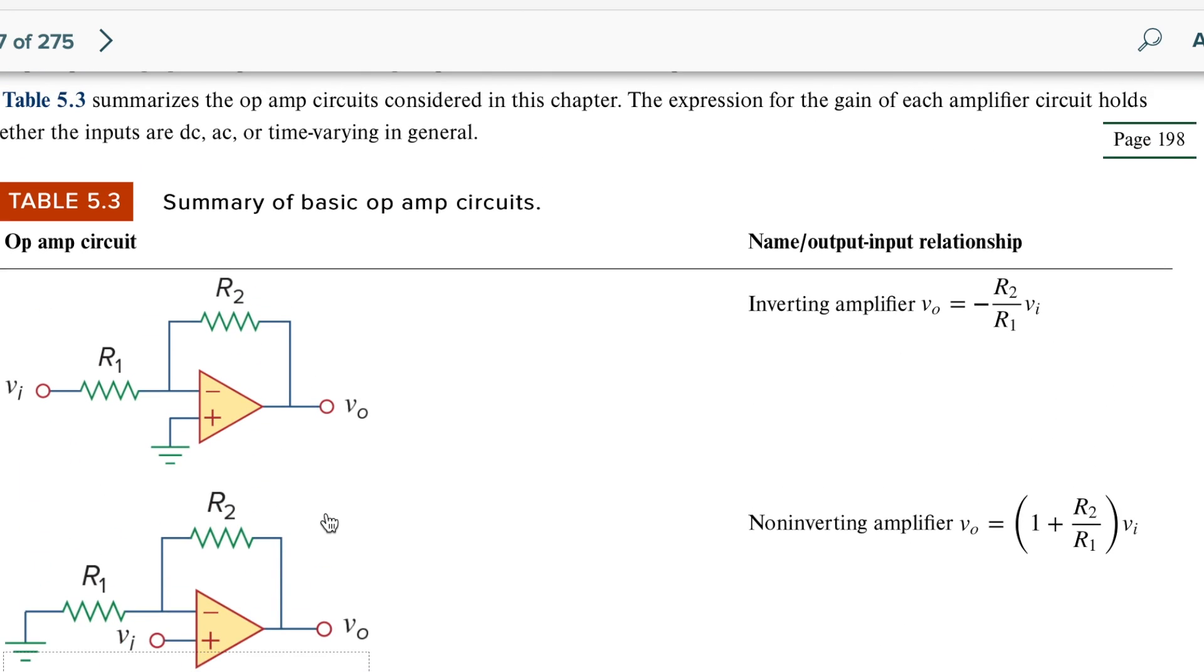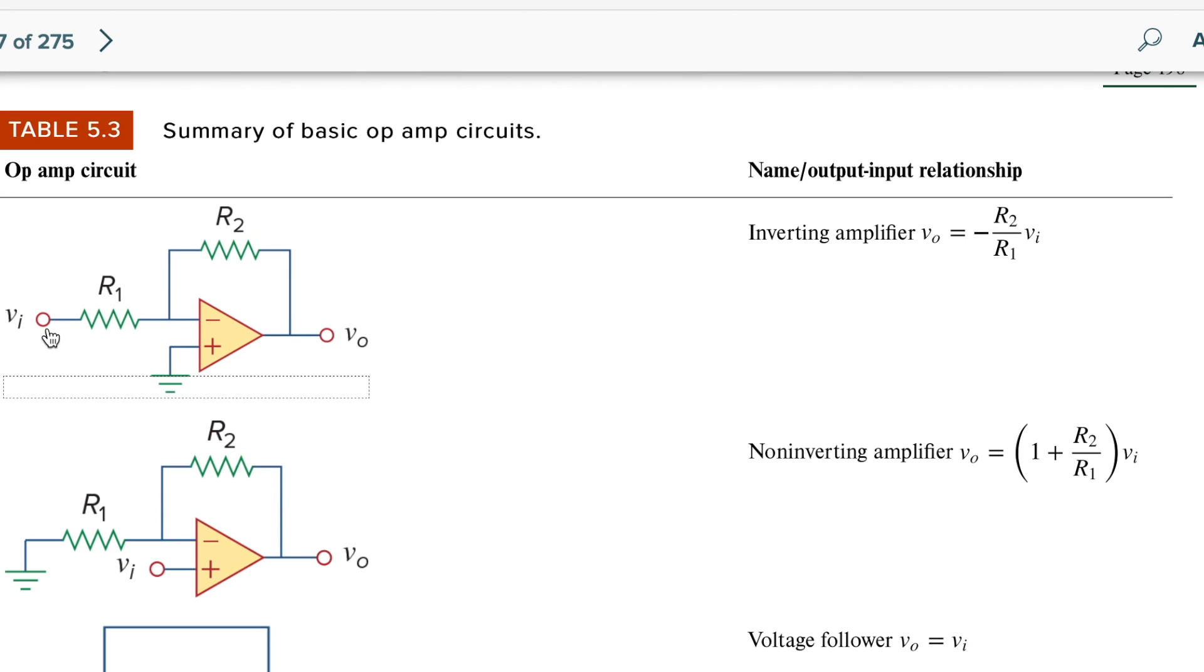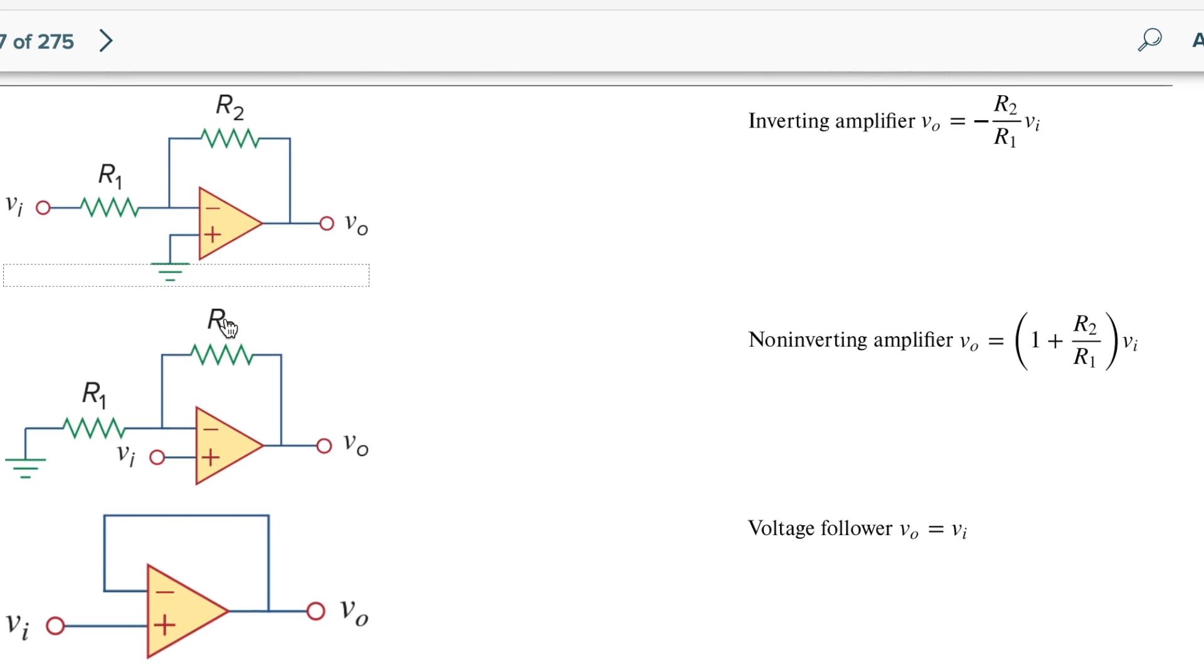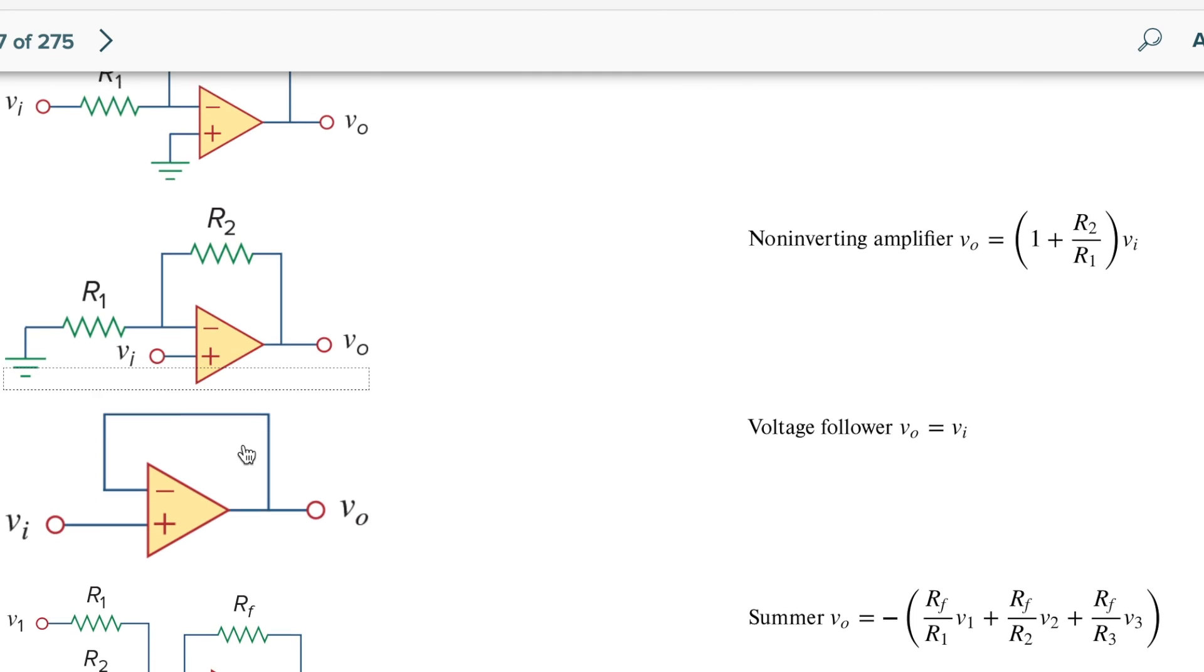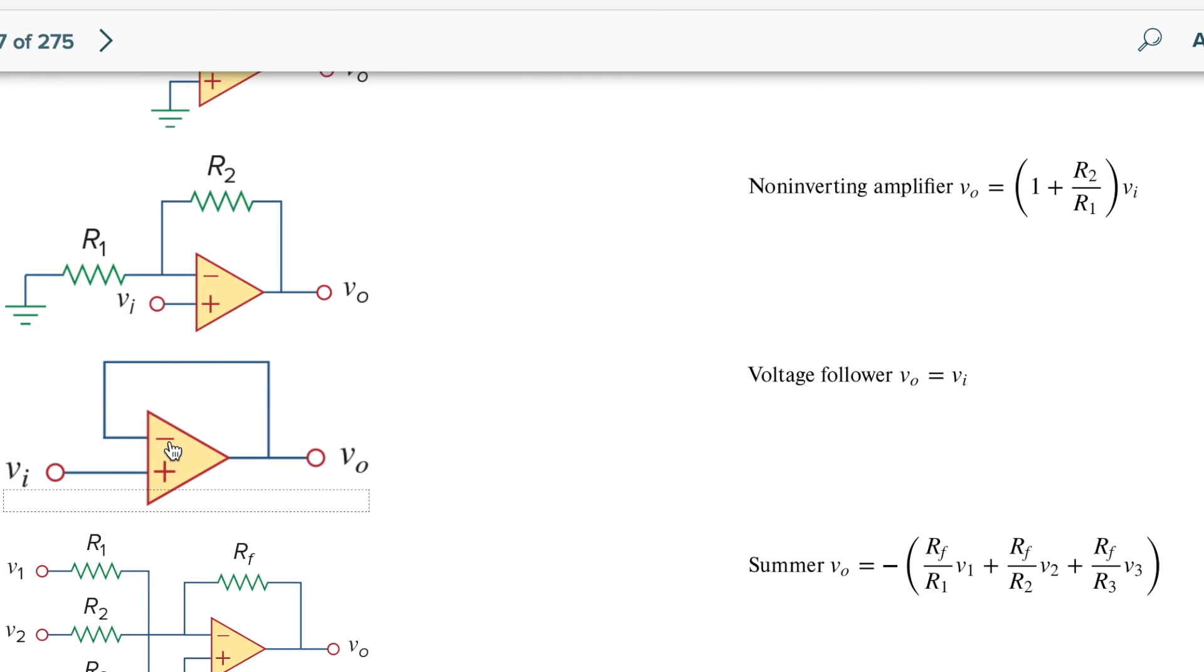Here in the inverting amplifier the input is connected to the inverting input and here in the non inverting amplifier the input is connected to the non inverting input. For the voltage follower there is no RF here and the inverting input is connected directly to V out and the input is connected to the non inverting input of the op amp.